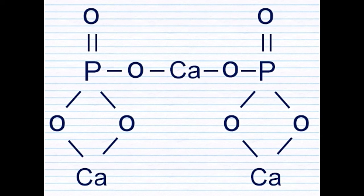Uses: tricalcium phosphate is found naturally in the most commonly consumed type of milk in the world, cow milk. As mentioned before, it helps bind casein micelles. Though at least two competing hypotheses have been proposed negating or minimizing the role of calcium phosphates in the structure of milk, this is still the conventionally held theory.